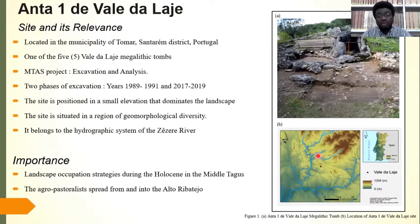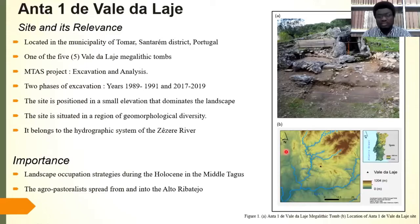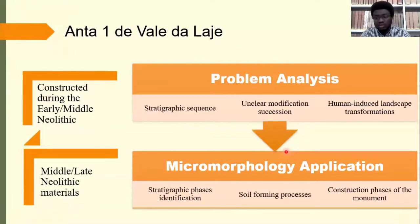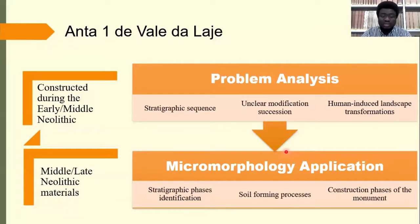The site is positioned on a small elevation that dominates the landscape and is situated in a region of geomorphological diversity. It also belongs to the hydrographic system of the Sicilian River. The site gives information about landscape occupation strategies during the Holocene in the Midi-Tagus, and about agro-pastoralist spread from and into the Alto-Libertadio. Previous research suggested the megalithic monument was constructed during the early and middle megalithic, but recent research indicates it actually dates between the middle and late megalithic.